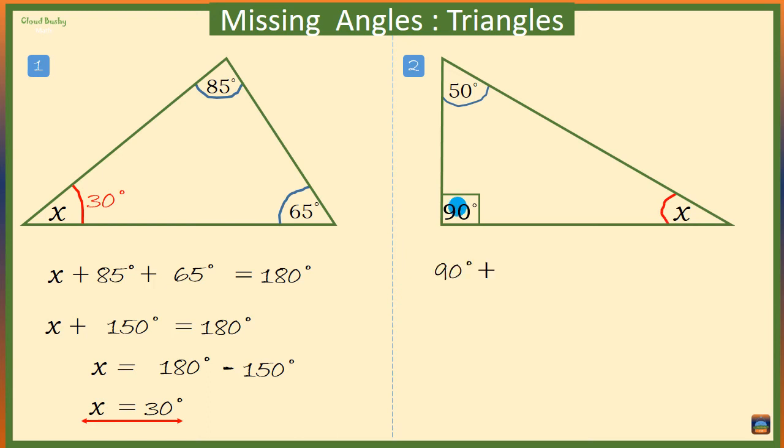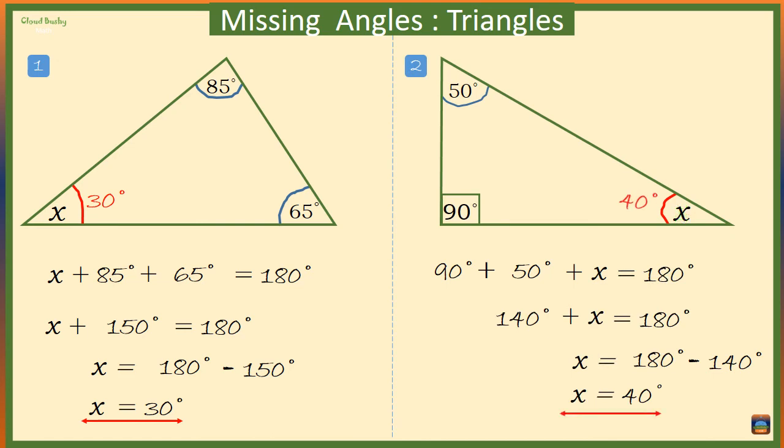If we add 90 plus 50 plus x degrees, we should get a total of 180 degrees. Now 90 degrees plus 50 degrees will give us 140 degrees plus x should be 180 degrees. We want x by itself, so let's take 140 degrees to the right hand side. So we have x is equal to 180 minus 140 degrees, which is 40 degrees. That means the angle marked x is 40 degrees.